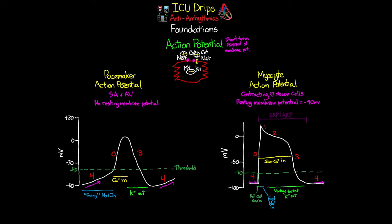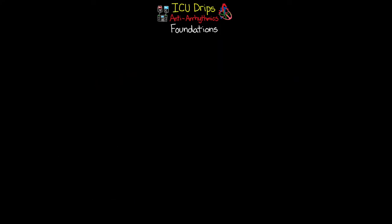That covers the two action potentials that play a vital role in leading to contraction of cardiac muscle cells. To wrap up this lesson, I want to cover the different classes of antiarrhythmic medications. This category is very diverse and is further divided into essentially five classes, each with its own specific mechanism of action and monitoring parameters. In the next lesson we'll go in depth into each one, but here's a quick overview. The naming convention is simply numbered.